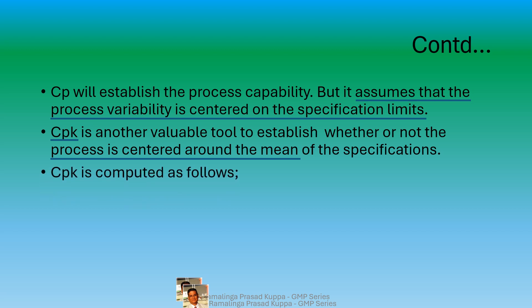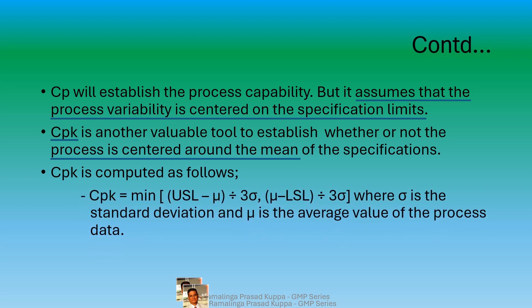CPK is another index that determines whether the process is centered on the average of the process width. CPK equals the minimum of [(USL minus mu) divided by 3 sigma] and [(mu minus LSL) divided by 3 sigma], where sigma is the standard deviation and mu is the average value of the process data. If the minimum value is less than 1, the process is not capable of producing the product at the center mean point, so CPK should be greater than 1.